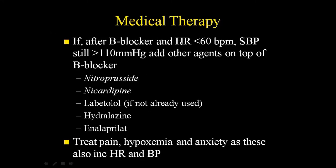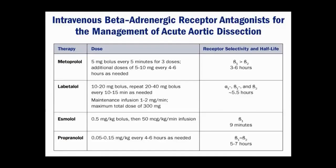Try beta blockers first. Goal heart rate of 60. Get the blood pressure down. If that's not enough, add agents — the beta blocker is decreasing shear stress and heart rate, then just add agents as needed. Treating pain is important because catecholamines from pain raise the pressure. In the cocaine setting, anxiolytics are also important. You can use metoprolol, labetalol IV or PO, or esmolol — these are the common agents.